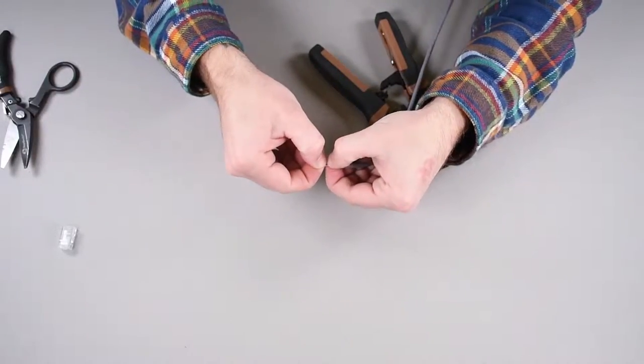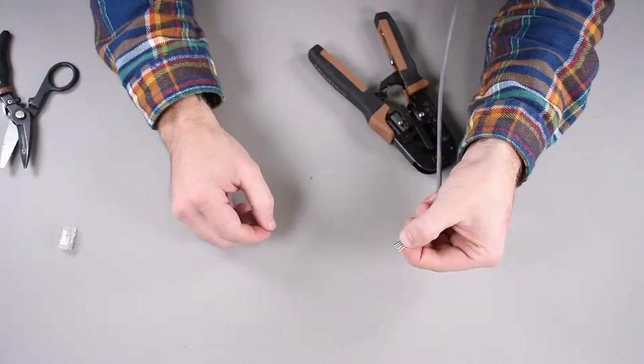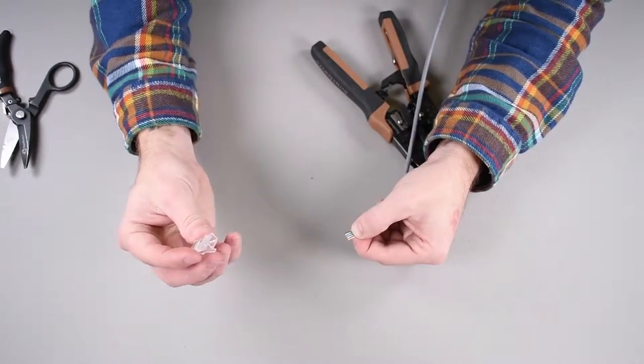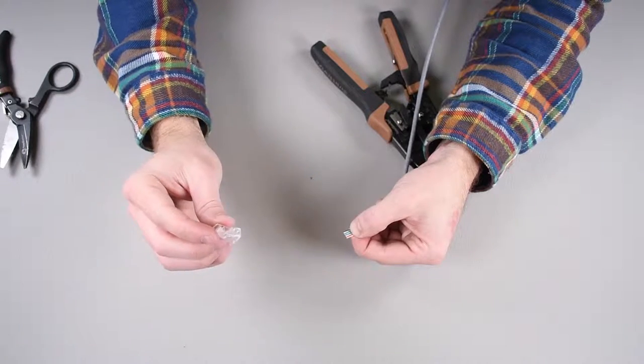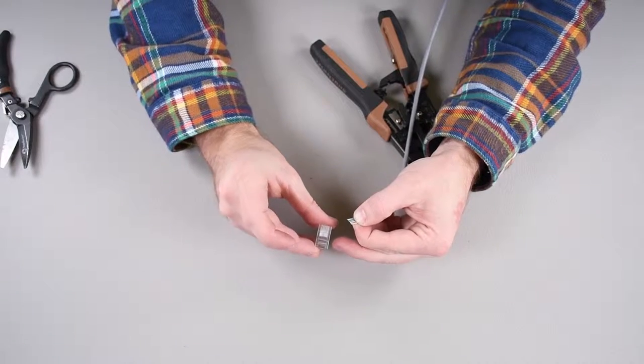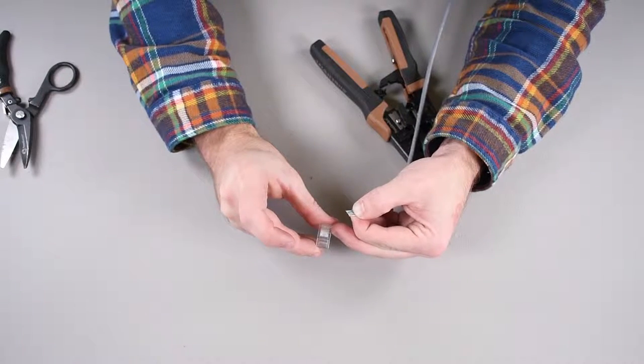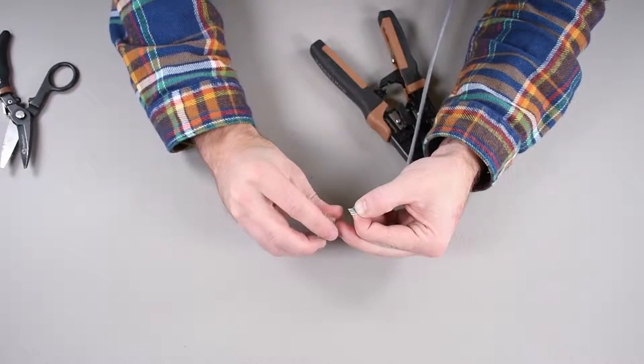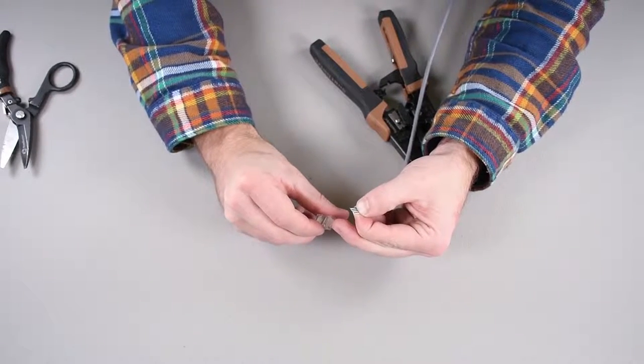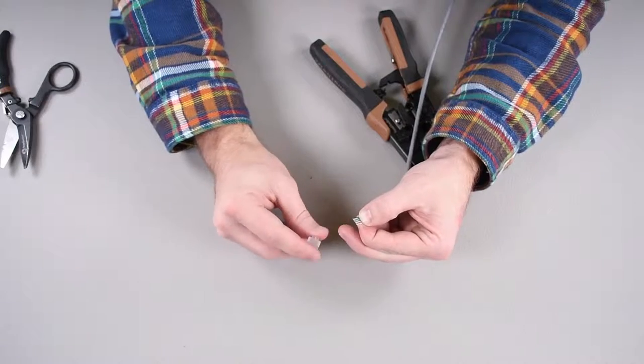All right. So now we have our ends of our cables all nice and trimmed off. We're going to insert them into the channels. So there's little channels inside this Cat5 connector that each one of these wires will sit in. And then you want them to butt up against the inside, kind of bottom out, so to speak, in the inside of the connector.